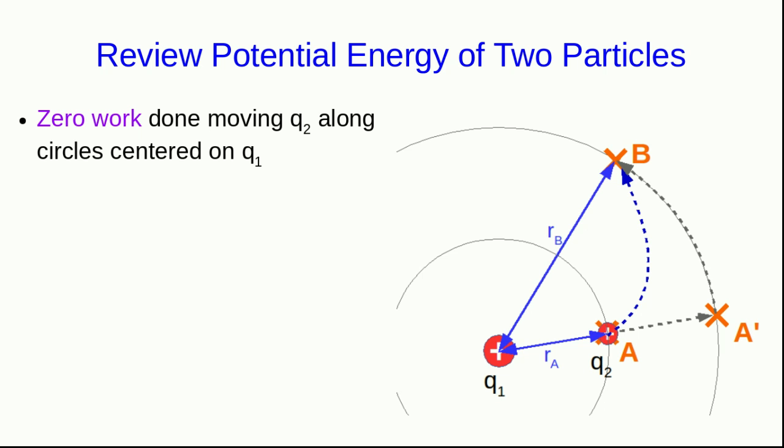As we saw in the last lecture, for a situation like this, where we're moving this charge Q2 in the vicinity of this other charge Q1, during any motion along a path like this one from A' to B that moves along a circle centered on Q1, the electric force will do zero work on Q2.